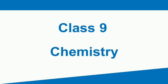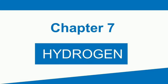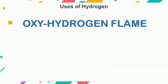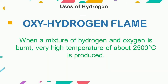Hello everyone, this is a ninth class chemistry video lesson and we are going to learn about some of the uses of hydrogen. Hydrogen is used in oxy-hydrogen flame. This is because when a mixture of hydrogen and oxygen is burnt, a very high temperature of about 2500 degrees Celsius is produced.